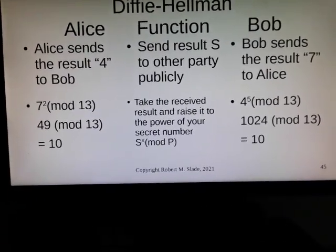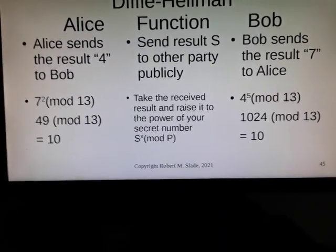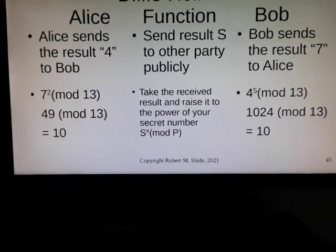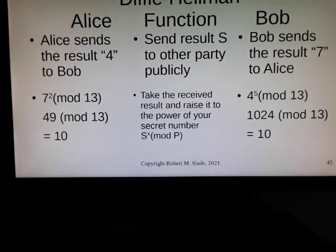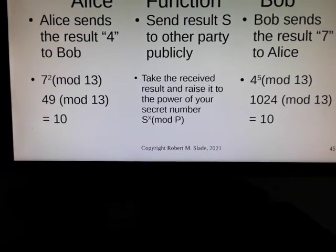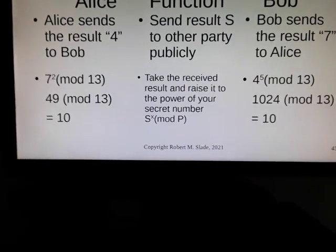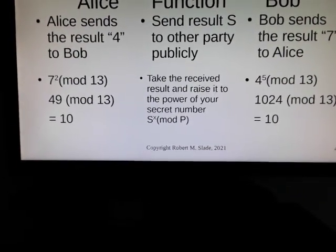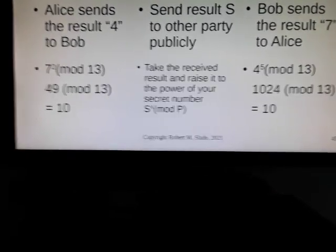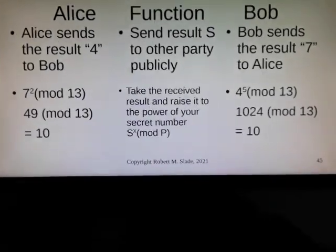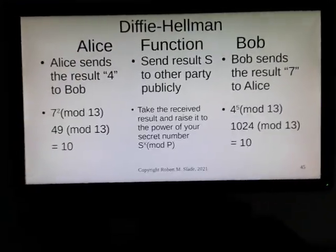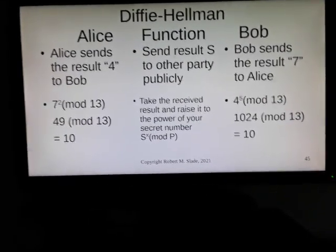Alice gets the 7 from Bob and calculates 7 squared mod 13: that's 49 mod 13, which equals 10. Bob gets the 4 that Alice sent him and uses his secret number: 4 to the 5th power mod 13 is 1024 mod 13, which equals 10. Look — it's the same number! And it's always the same number. That is the secret.